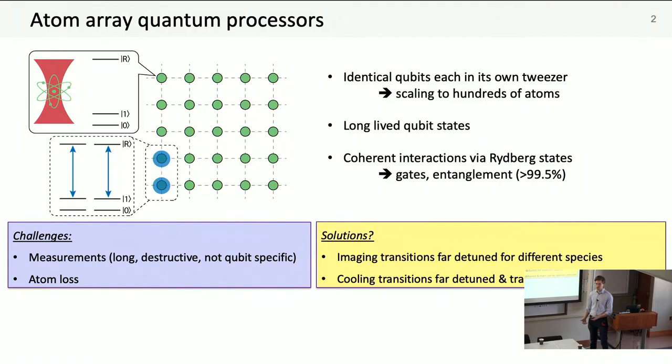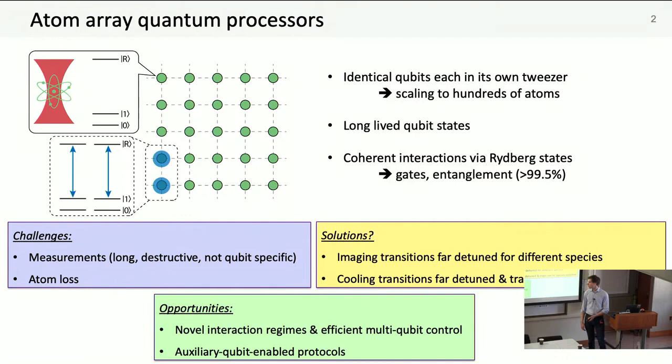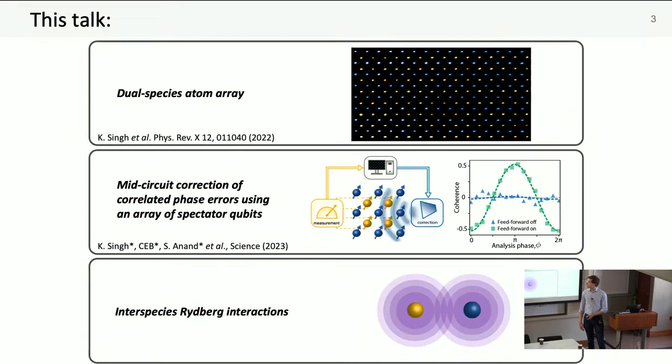But like all platforms, there are challenges. Two in particular are that measurements are typically long, destructive, not really qubit specific, and over time as we run deeper circuits we have atom loss. This is something we're going to have to overcome if we want to run really long protocols. What I hope to do in this talk is convince you that dual species systems offer potential solutions.